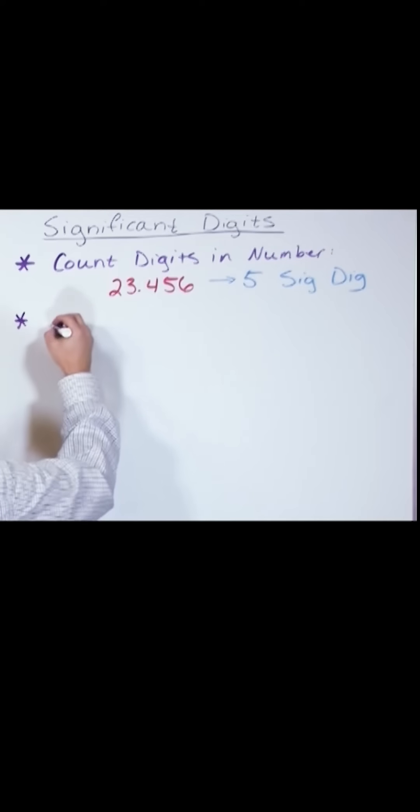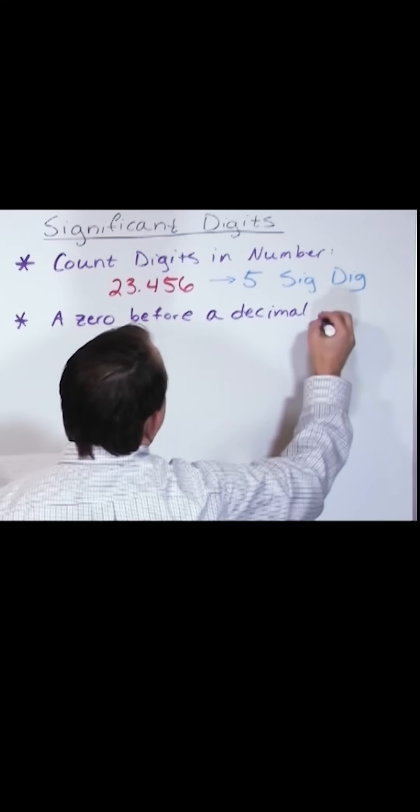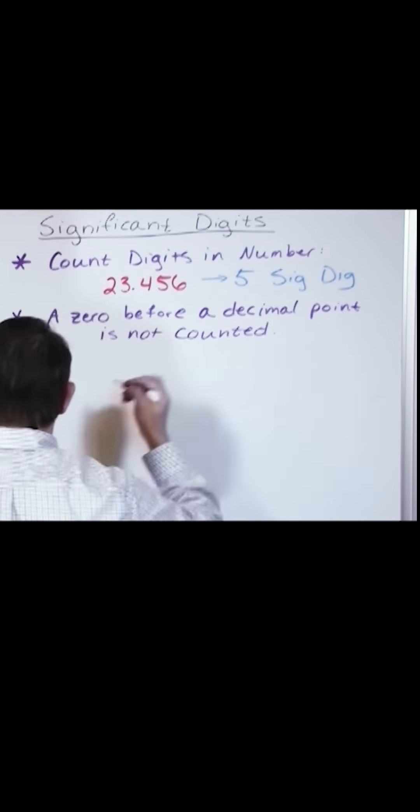The next little rule: a zero before a decimal point is not counted. And let me give you an example of that.